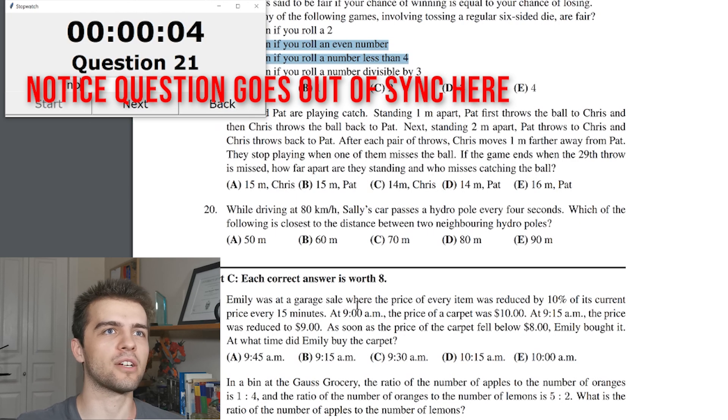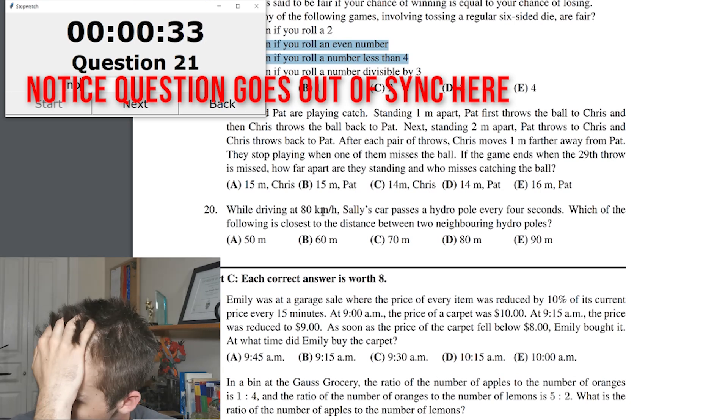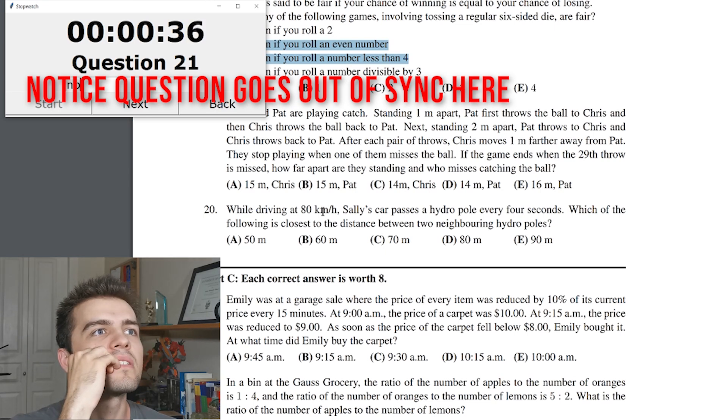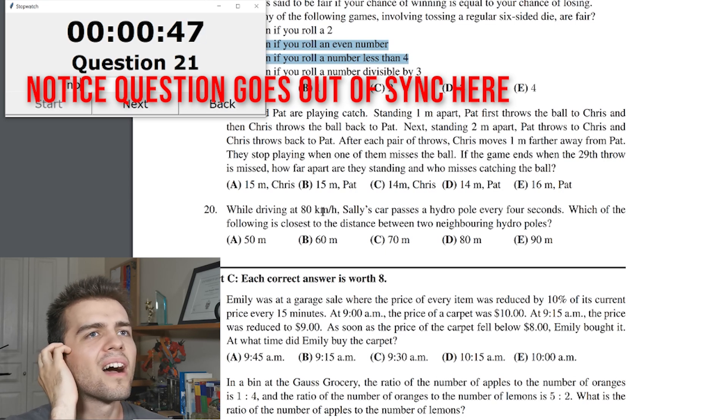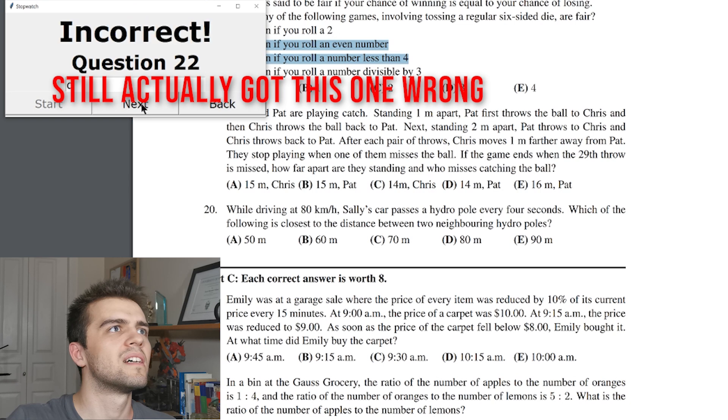While driving at 80 kilometers an hour, Sally's car passes a hydro pole every four seconds. Which of the following is the closest to the distance between two poles? Every four seconds. So every four seconds, she's driving 80 kilometers an hour. I have to convert this to seconds. 80 kilometers per hour is how many meters per second? It's 80,000 divided by 3,600, which is around 20, 20 meters per second. I would say 80. Screw it. I think it's close to that. Nope.